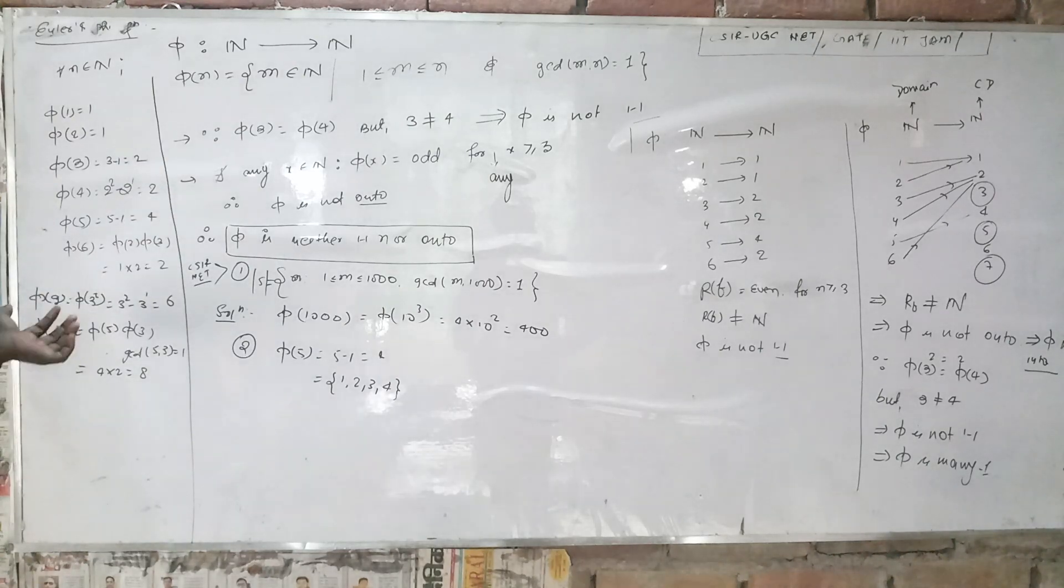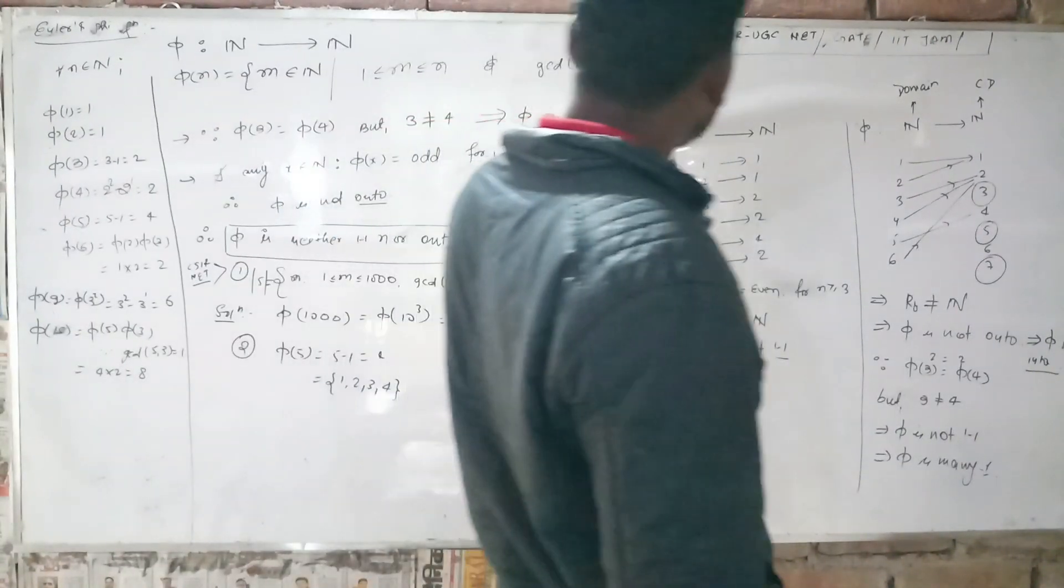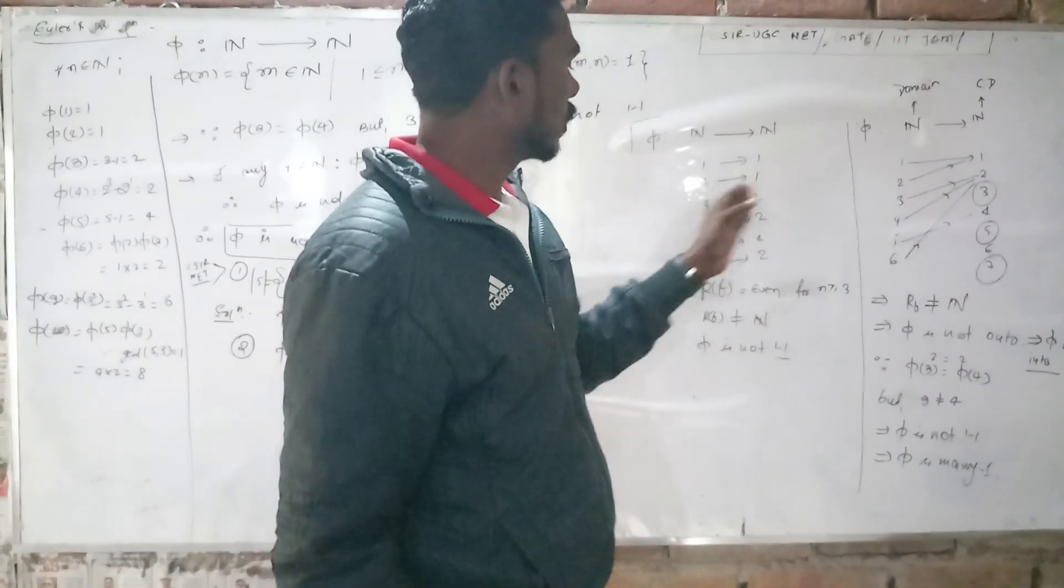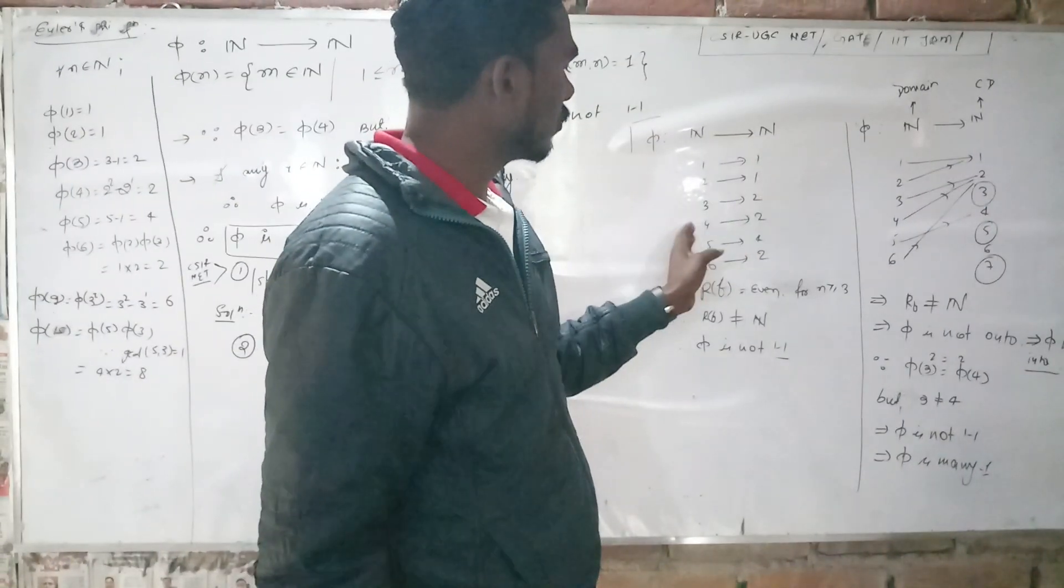These are the examples. We have phi(1) = 1, phi(2) = 1, phi(3) = 2, phi(4) = 2, and so on.